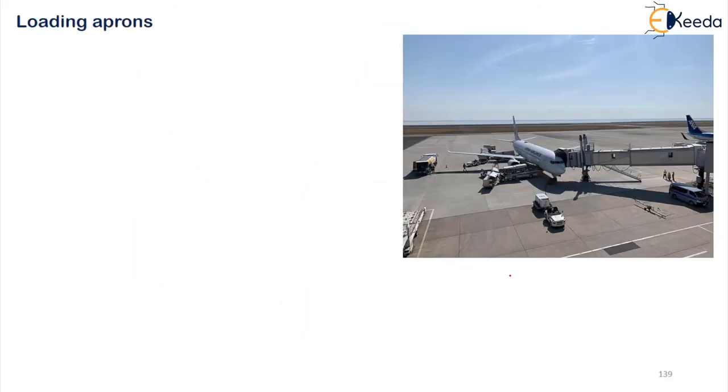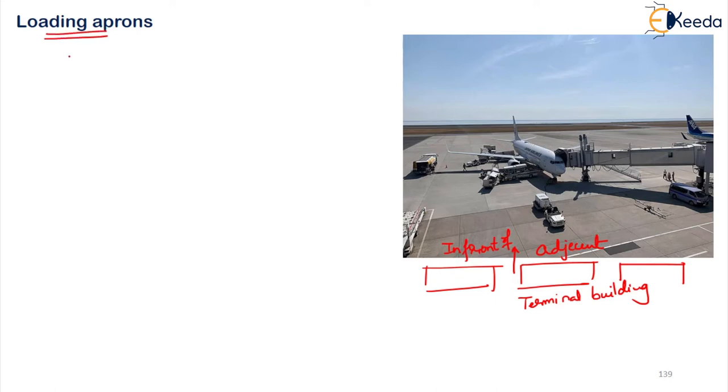To get started, the pavement which is adjacent to or in front of the terminal building is called as your apron. So there is a terminal building here, adjacent to it or in front of the terminal building is called as apron, and the apron which we use for loading and unloading of your goods, passengers, etc. is called as your loading apron.